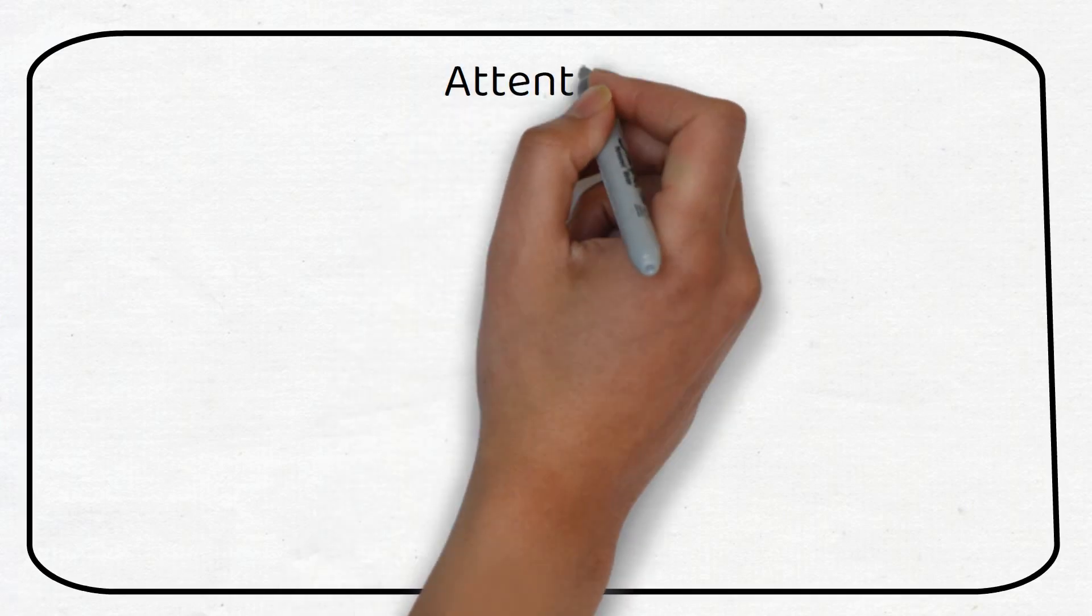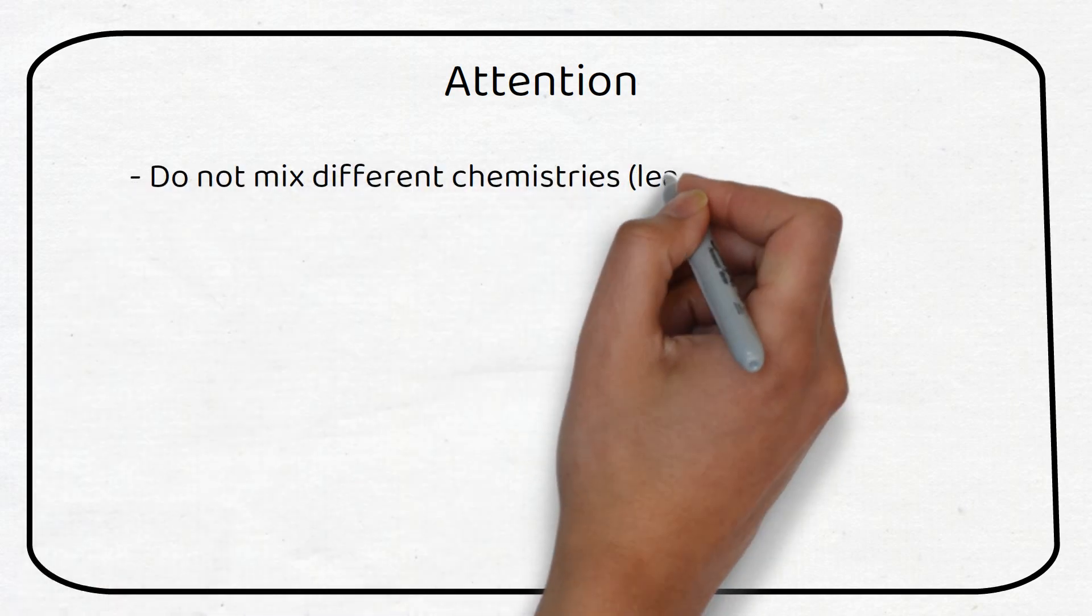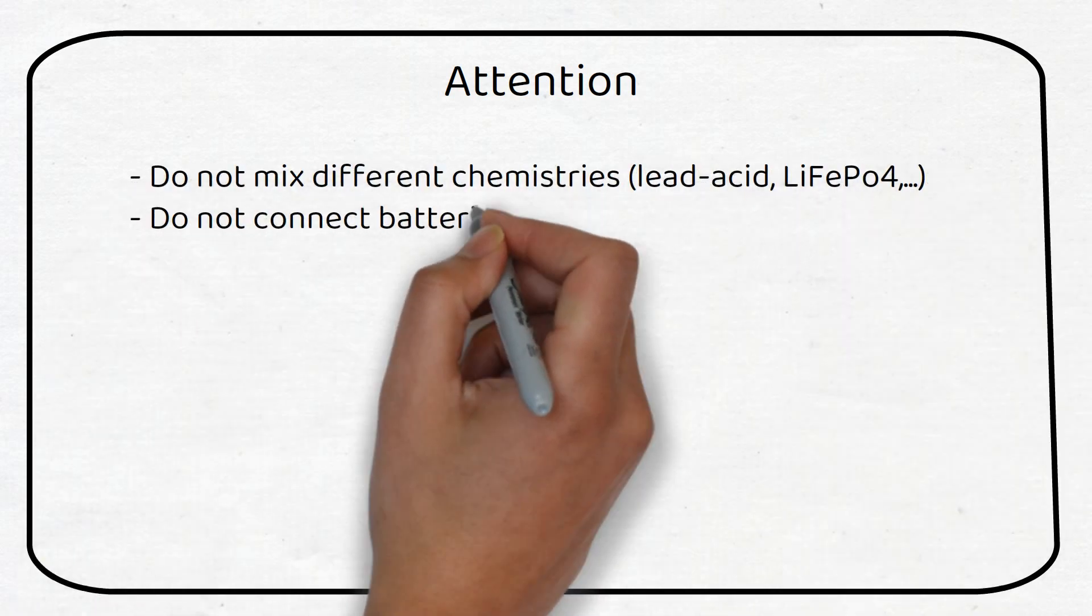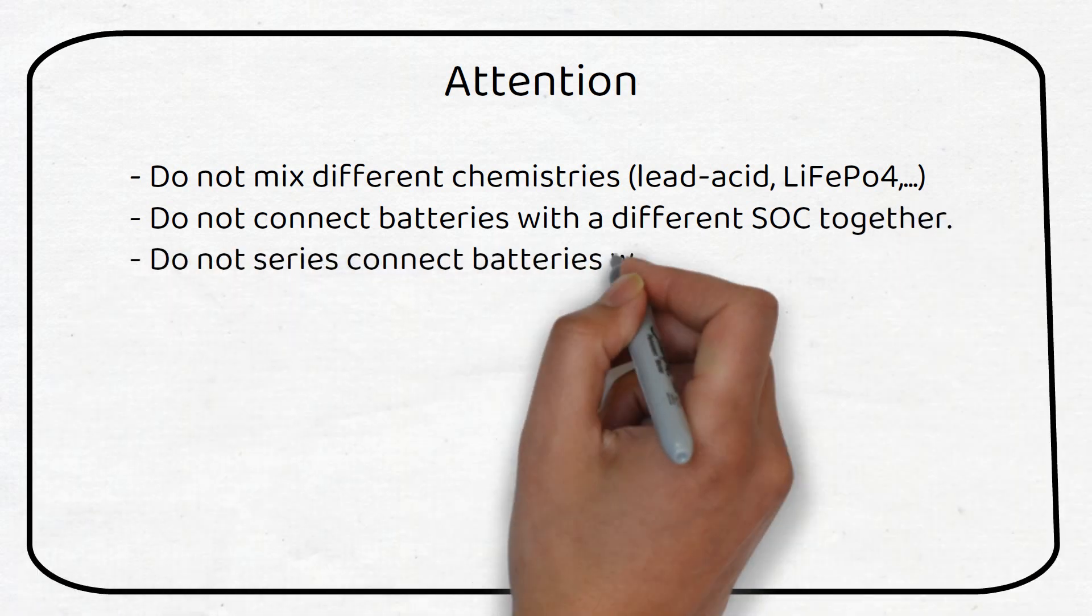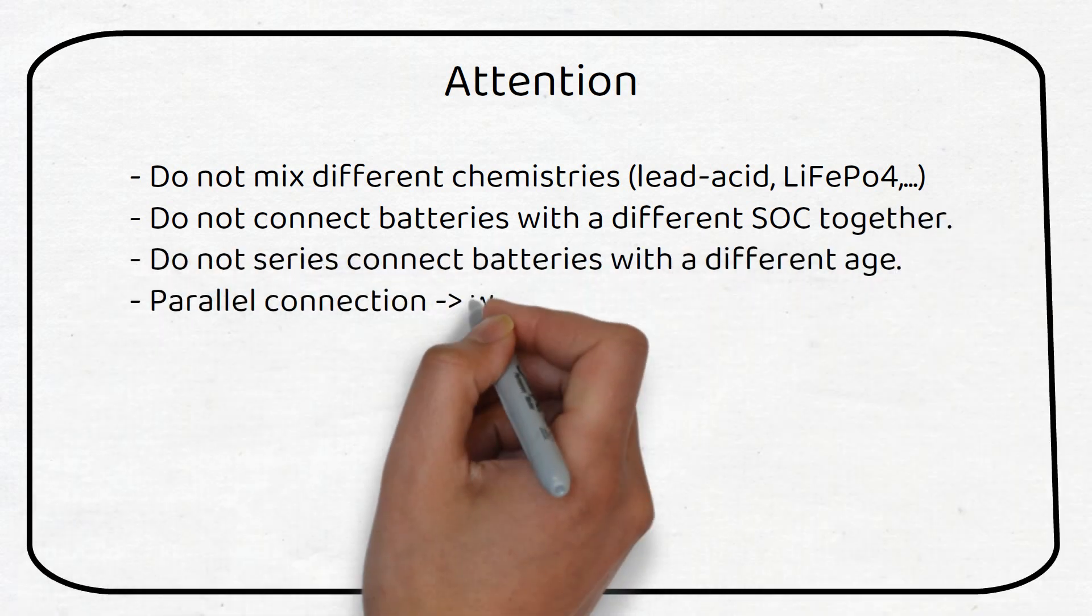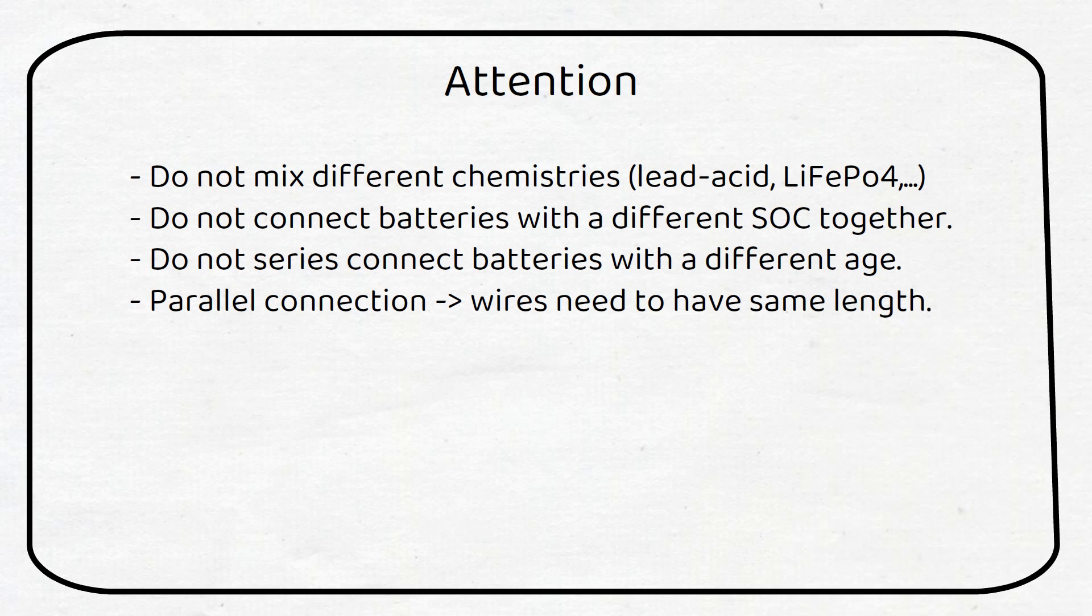There are a few items we need to take into consideration when wiring our batteries together. The first one is to not mix batteries of different chemistries. Another one is to not connect batteries with a different state of charge. The inrush current will be bad for the battery. Instead bring them to the same voltage first and then connect them. Do not series connect batteries with a different age. The capacity of these will be reduced and reduce the total capacity of your battery.